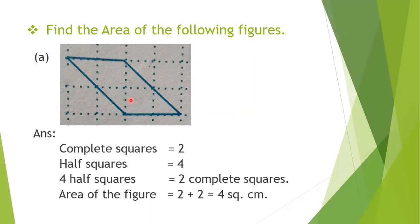How many full squares are there? One, two — it covers two complete squares. Now we will also see how many half squares it covers: one, two, three, four — it covers four half squares. And you know, children, four halves make two full squares. Two halves make one whole, so four half squares are equal to two complete squares.